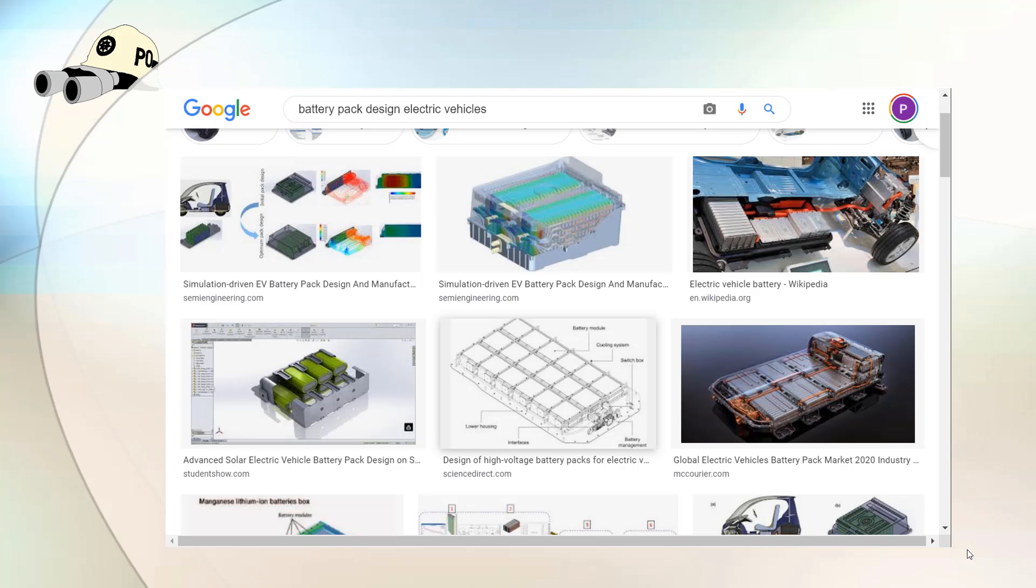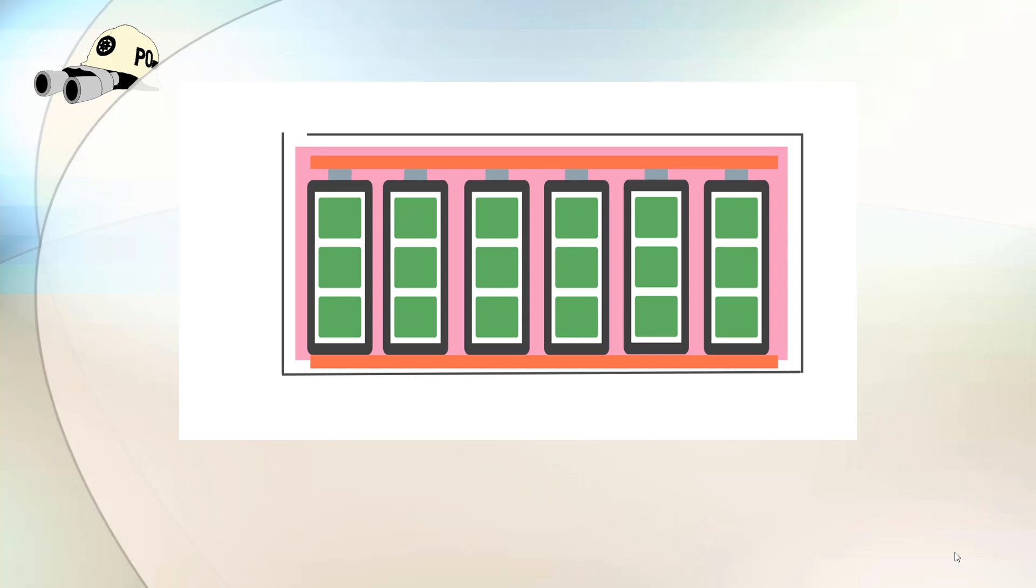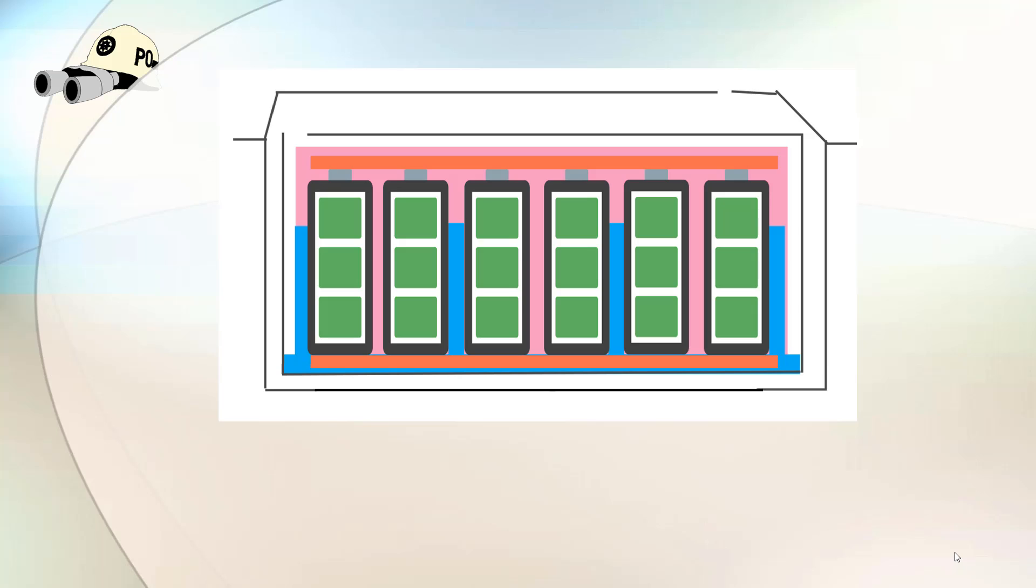If you Google battery pack design electric vehicles and go to the image side of it, you see tons of images with different battery pack designs. This is an example of one way of building a battery pack. You have the battery cells and you connect them with conductive lines, the plus pole and the minus pole. You place it in some kind of fire retardant foam and maybe a container on the outside of that foam. You place several of those modules together and you place them in a compartment, which in total is what we call the battery pack. Below the battery pack to protect from damage from the road, you can place a protective casing on the outside.